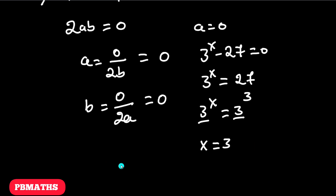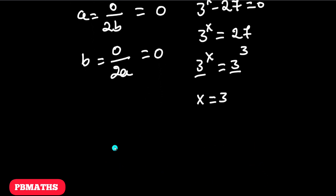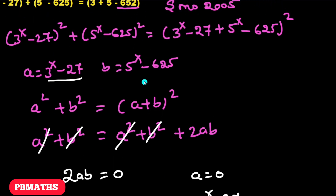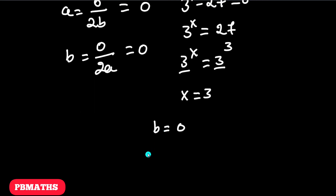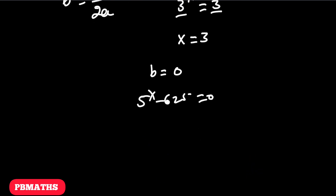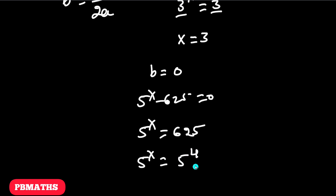Similarly, taking b = 0: since b = 5^x − 625, we write 5^x − 625 = 0, so 5^x = 625 = 5⁴. Again the bases are equal, so we equate the powers and get x = 4.